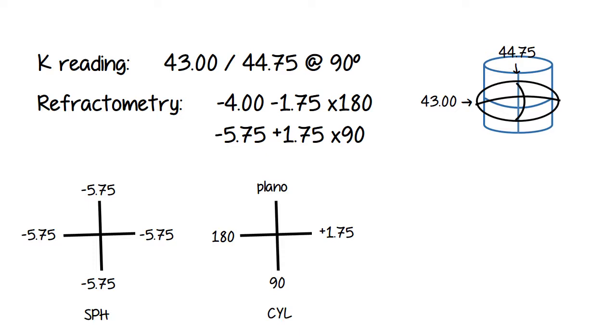So look what happens when I put this cylinder over top of the patient's eye. The steep part of the patient's cornea is at 90 degrees and the steep part of the lens, the cylindrical part of the lens, is at 180. So the steep balances the steep. And then the cylinder has a flat side at 90 and the patient's eye is flatter at 180.